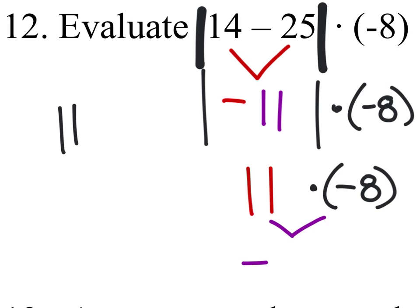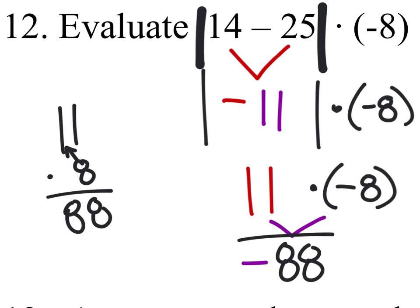From here we can simply multiply 11 by 8, and 8 times 1 is 8, and 8 times the 1 here is 8 as well, and so our final answer is negative 88.